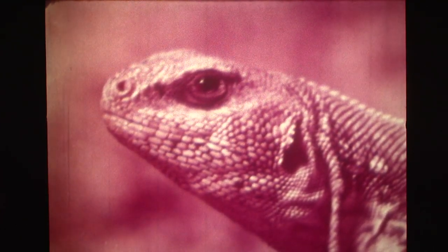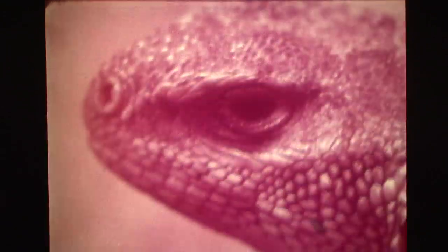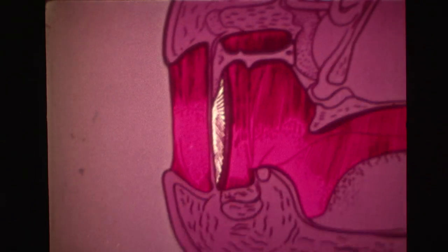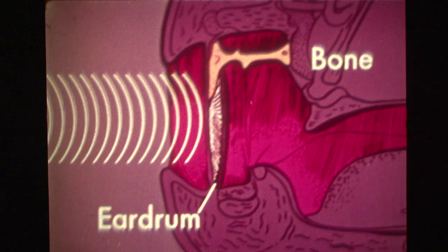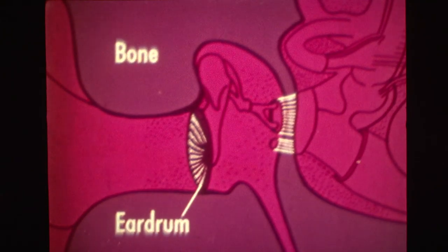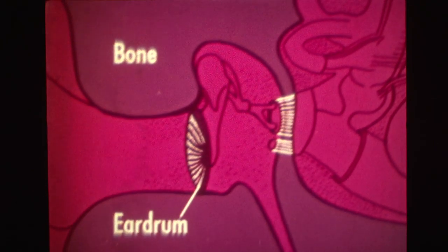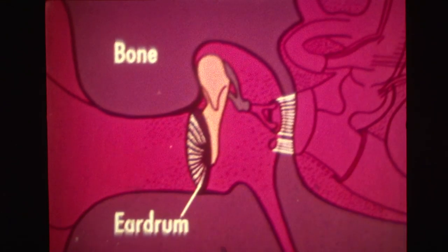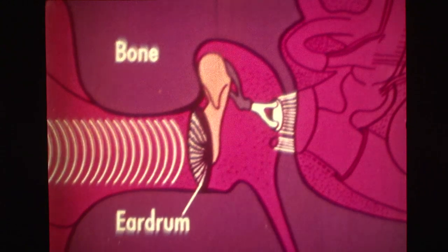The ear of a reptile is more rudimentary than that of the mammal. It lies close to the surface and is not covered or protected in any way. To conduct sound from the eardrum to the inner ear, there is only one small connecting bone. In the case of the mammal, there is an external flap which collects the sound and provides some protection. The eardrum is buried much deeper in the skull and is connected to the inner ear by three small bones, which transmit sound vibrations with much greater efficiency.